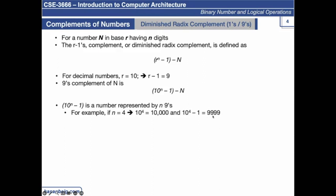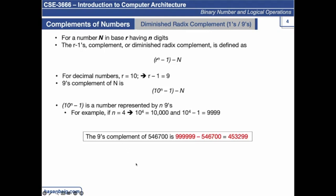What you need to remember when calculating nine's complement: subtract all the number's digits from nine. For example, the nine's complement of 546700 — which has six digits — is calculated by subtracting each digit from nine. That is the key takeaway from all this general representation of nine's complement. Whenever you are asked to find the nine's complement of a number, simply subtract each digit from nine. We are doing this to find the negative equivalent of the number.